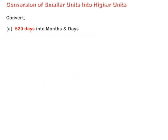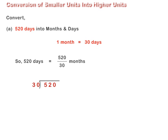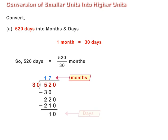Friends, can you convert 520 days into months and days? We know that 1 month is equal to 30 days. So, to convert 520 days into months and days, we divide 520 by 30. Observe the solution on screen. The quotient represents months and the remainder represents days. Thus, 520 days are equal to 17 months and 10 days.